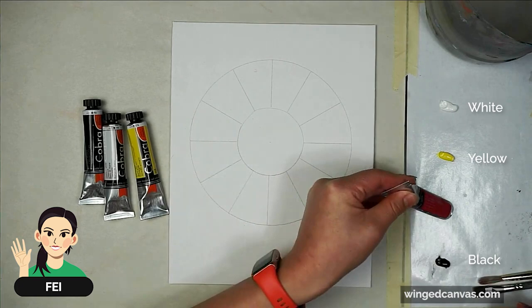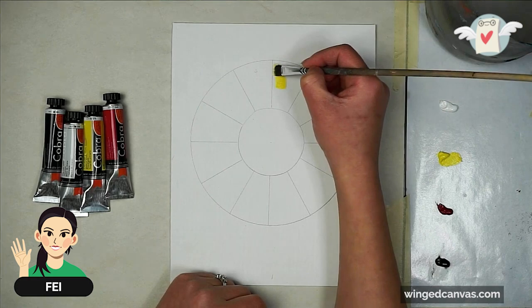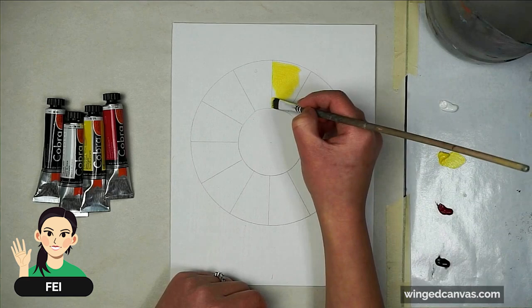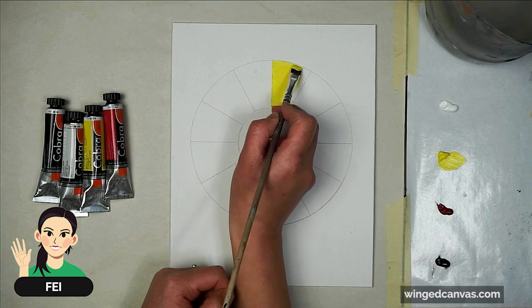Let's start with our primaries because those are just the pure color. So let's start with our yellow. You can turn your color wheel if you have to.